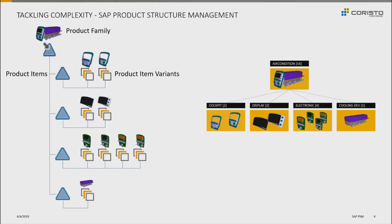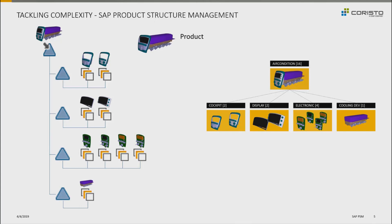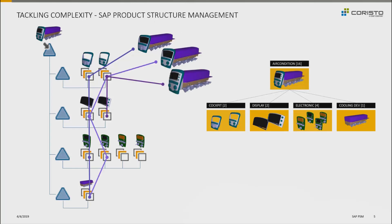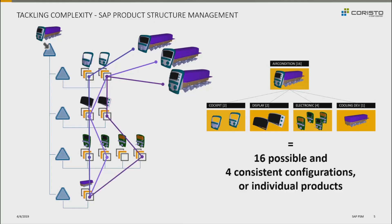Now, if I need the data for a specific configuration, I can select the associated components. Let's start with the basic model with just one climate zone and without integration of navigation. Then we need the cover, just one dial and a basic display, the associated electronics and the actual cooling unit, and of course the other configurations would be derived in the same way. Even in this simple example, you can see that we already have 16 possible and four consistent configurations.